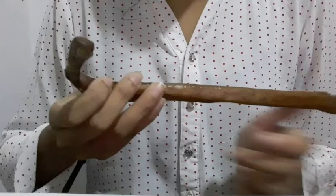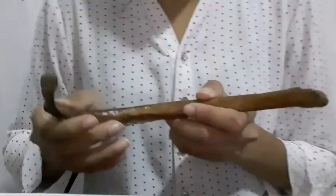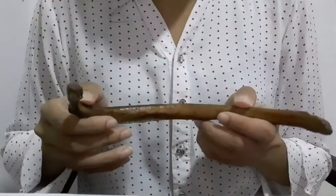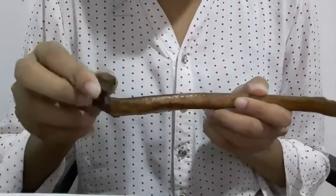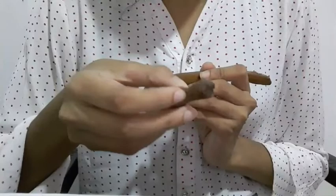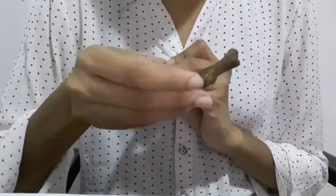Select a typical rib and describe it. This is a typical rib of right side. This is the head of the rib and this is the neck and this is the tubercle.